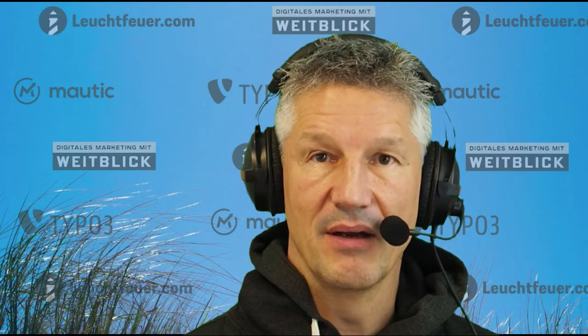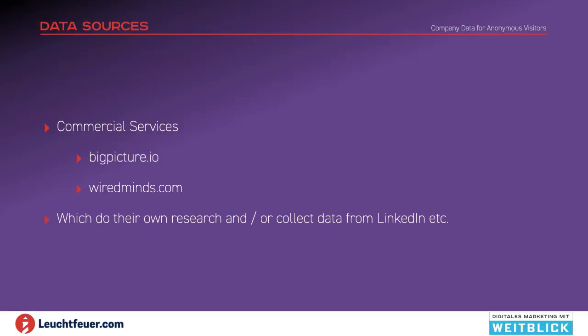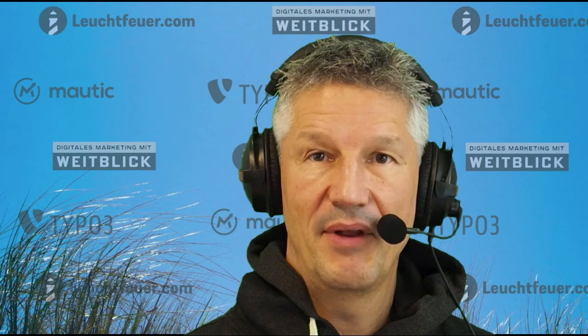Now where do we get this data from? We use commercial services that provide that sort of data, and we start off with two of them. They're called BigPicture.io and WiredMinds.com. Where do those companies get their data from? They do their own research, they collect data from public sources like LinkedIn, and put a lot of effort into raising the quality of the relevant company data.